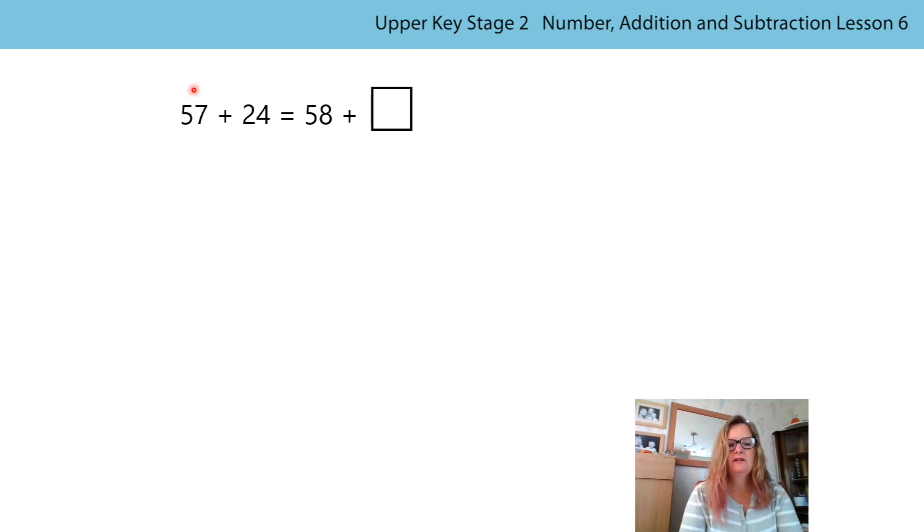Okay, what did you notice? 57, 24, 58. Which of these addends do you think we should use? Which is nearest, which makes the calculation efficient? That's right, the 57. I'm going to add one to get to 58, which means I need to subtract one from 24 to get 23. Missing number solved, hardly any calculating.